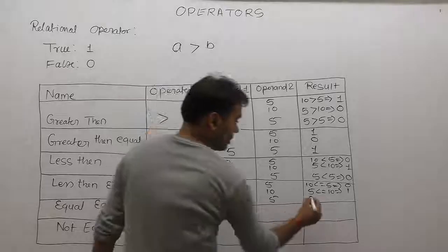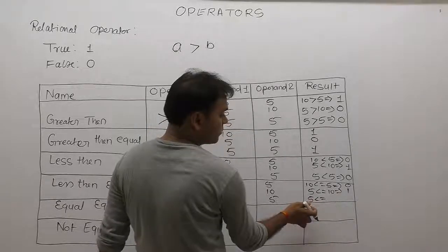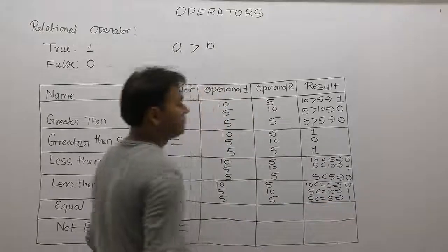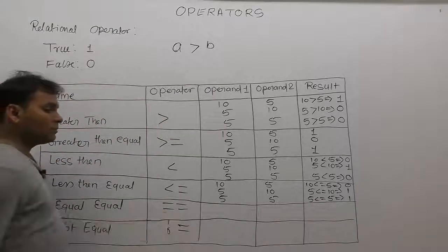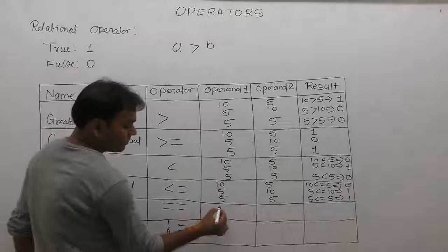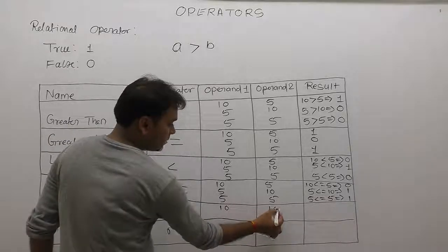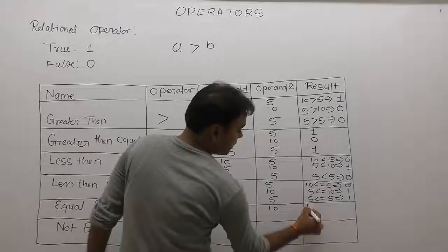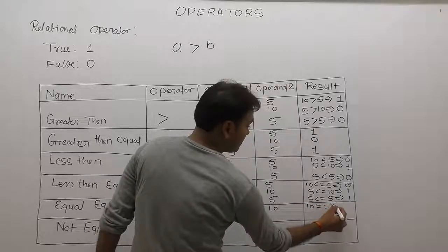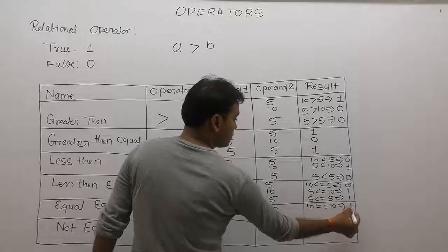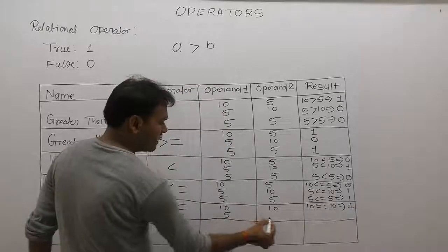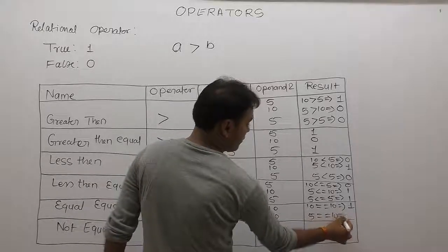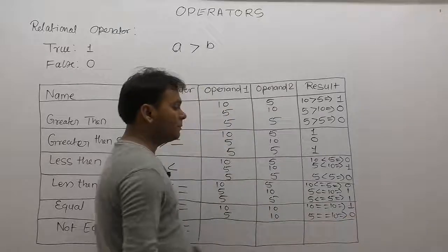For the equal equal operator: first operand ten, second operand ten — ten equal equal ten means both are exactly the same, therefore true, means one. First operand five, second operand ten — five equal equal ten is false, because the values are not the same. Equal equal returns true only when both operands have exactly the same value, otherwise false.